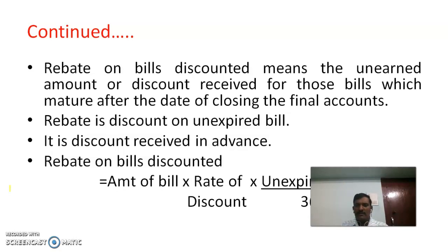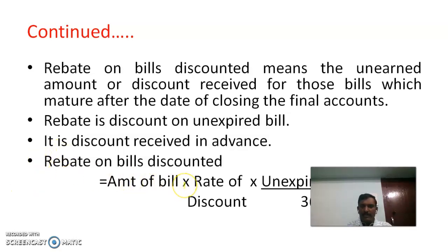Accounts are closed on 31st March of every year. We can calculate the amount of rebate on bills discounted through this formula: Amount of Bill × Rate of Discount × Unexpired Period divided by 365 days.